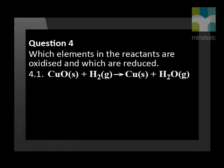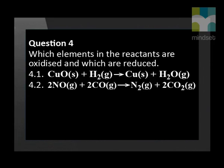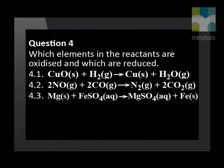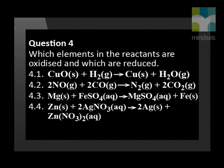It is time for you to get your table of standard reduction potentials and revise how to determine oxidation numbers so that you can identify reduction and oxidation. In each of the following equations, say which atoms in the reactants are oxidized and which are reduced: solid copper oxide reacts with hydrogen gas to form solid copper and water; two moles of nitrogen oxide gas reacts with two moles of gaseous carbon monoxide to form nitrogen gas and two moles of carbon dioxide; solid magnesium reacts with iron sulfate to form magnesium sulfate and iron; solid zinc reacts with silver nitrate in solution to form solid silver and a zinc nitrate solution.